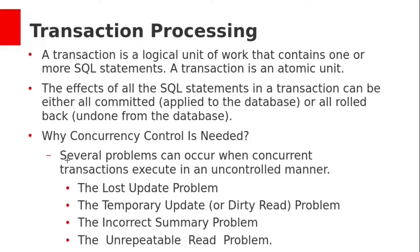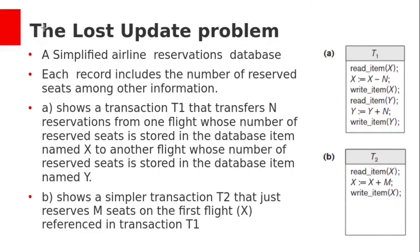We already discussed that there are several problems which might occur because of concurrency. Let's see these problems. The first is the last update problem. To demonstrate problems which can occur due to concurrency, let us take a simple airlines reservation database. Each record includes the number of reserved seats and some other information.